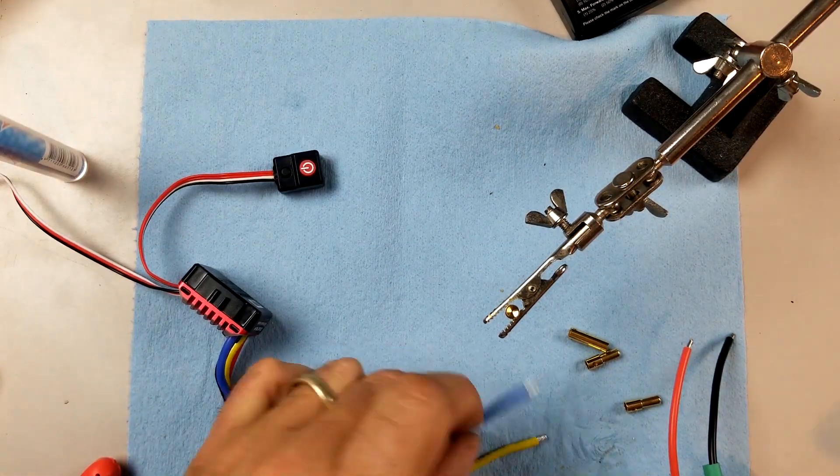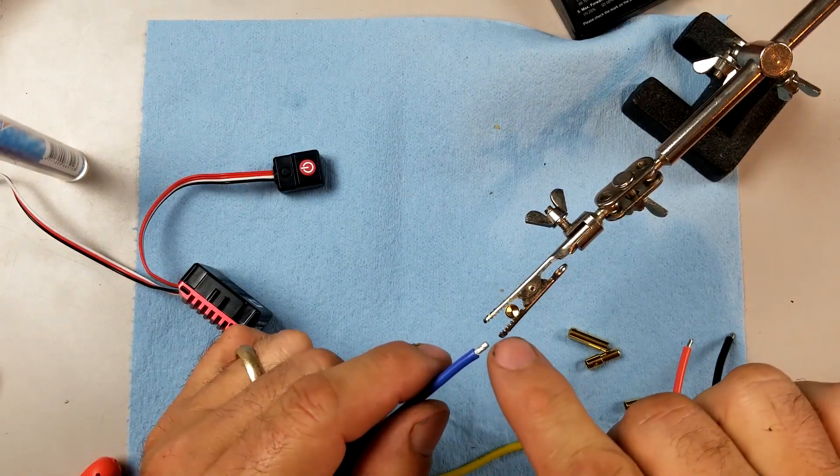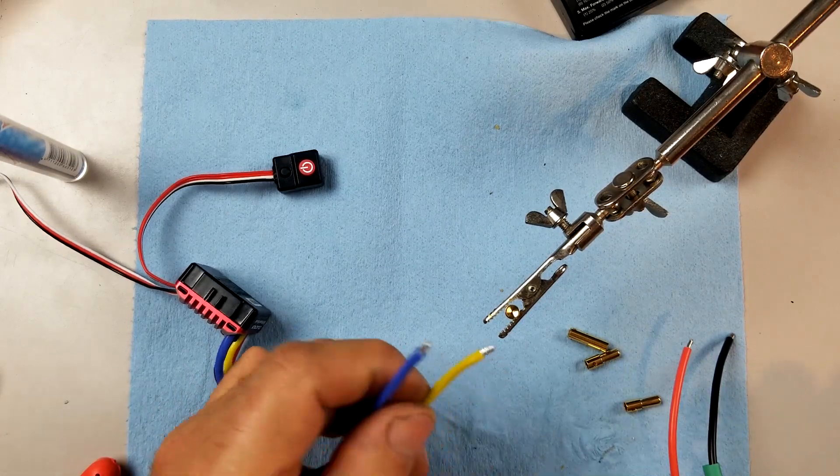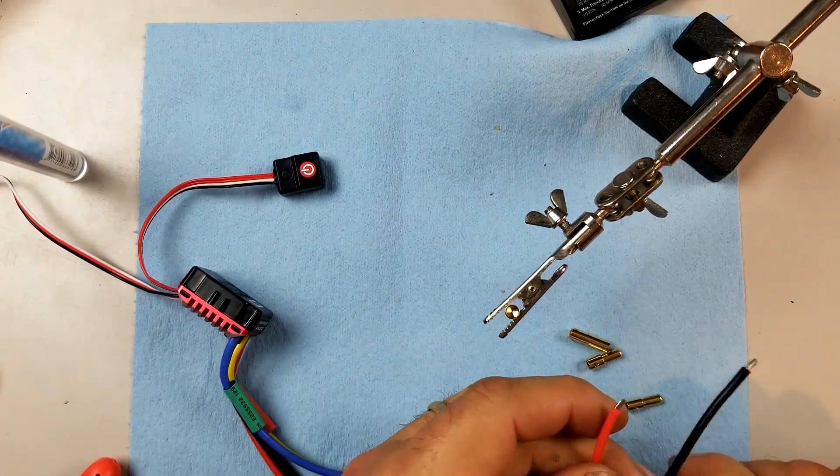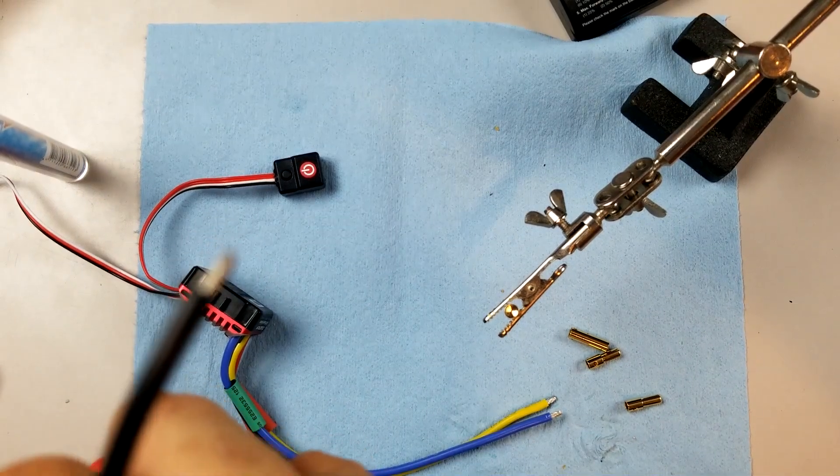So first thing you do is you pre-tin your wire, which means put solder onto the wire. These come already pre-tinned. These are not. These are the leads for the motors.